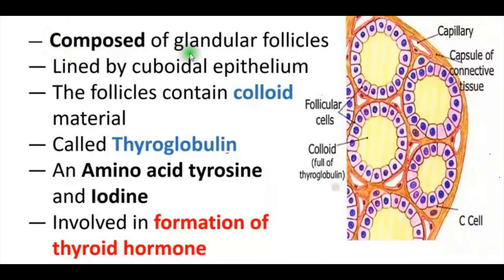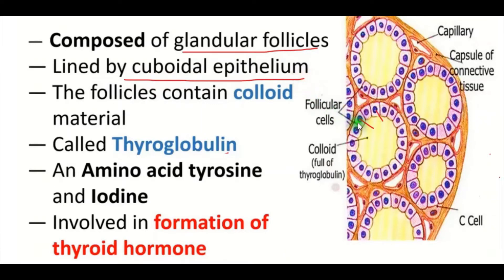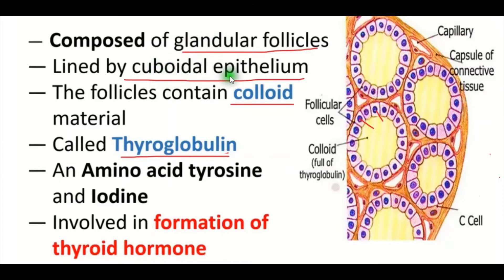This gland is composed of glandular follicles lined by cuboidal epithelium. The follicles contain colloid material. That colloid material is known as thyroglobulin. So the gland is composed of glandular follicles lined by cuboidal epithelium, and the follicles contain colloid material known as thyroglobulin.